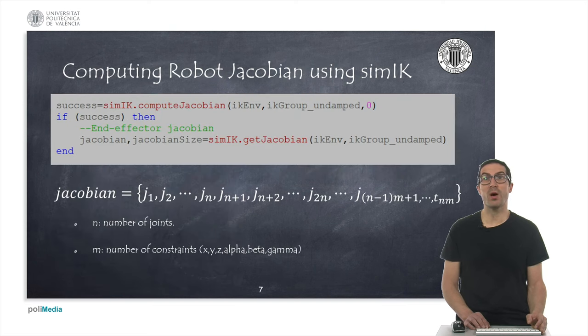Once the plugin is configured and all previous functions implemented, then we can compute the robot Jacobian. First, we call the function SIMIK compute Jacobian, and in case of returning a true value, then we call the function SIMIK get Jacobian. This second function returns two values. The first one is a table with all elements of robot Jacobian, and the second one is another table with the dimension of the Jacobian. Specifically, the number of elements in the table is equal to the number of joints multiplied by the number of constraints in X, Y, Z, etc. The order in which these elements are ordered is indicated here in this slide. And as you can see, we need to provide the Jacobian in a matrix form if we want to use it for further computations.